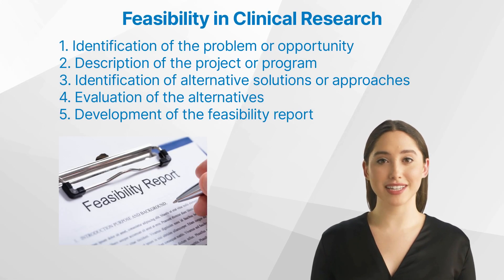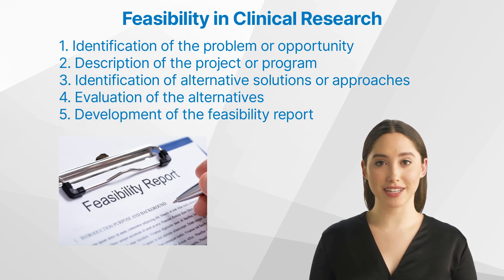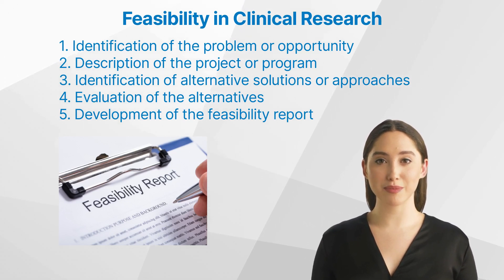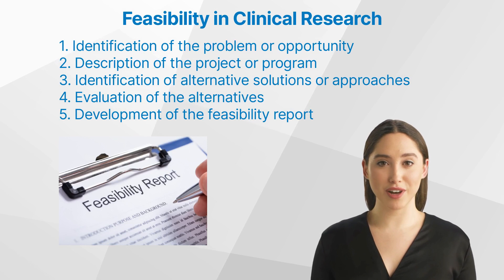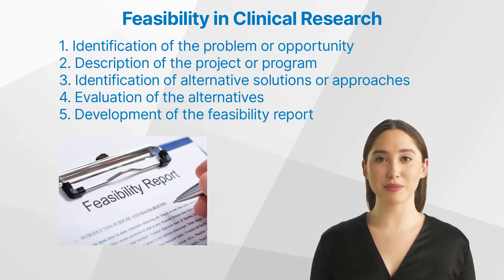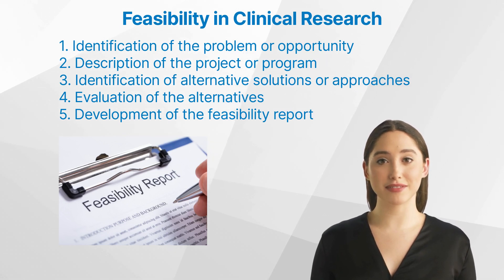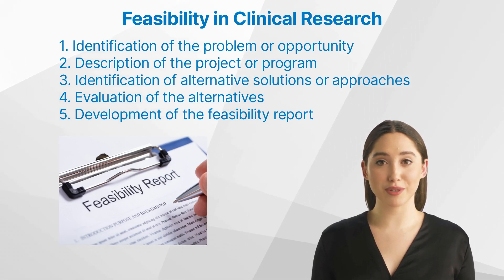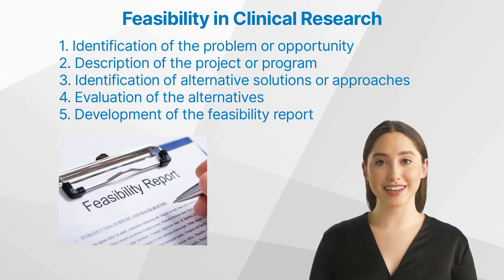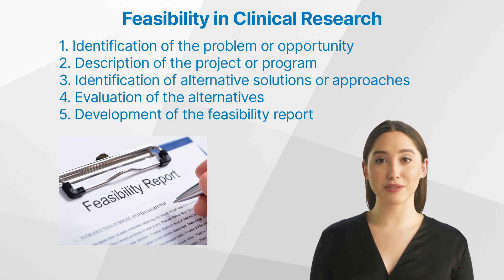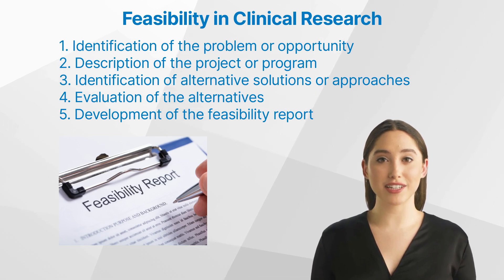Conducting a feasibility study involves several steps. One: identification of the problem or opportunity, including defining the goals of the clinical trial. Two: description of the project or program, outlining how the study will be conducted. Three: identification of alternative solutions — if initial plans are not feasible, alternative strategies need to be considered. Four: evaluation of the alternatives, assessing each for feasibility. Five: development of the feasibility report, summarizing the results and detailing if the project is feasible.